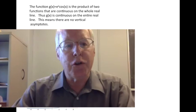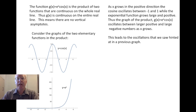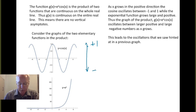If we consider the graphs of the two elementary functions in the product — the cosine graph and the exponential graph — we can think about how g is formed by multiplying the y values for these two functions together. As x grows in the positive direction, the cosine function just oscillates between plus one and minus one, staying in that range.